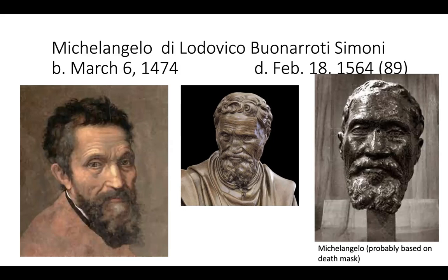Michelangelo was born outside of Florence. His mother died by the time he was six years old. His father was in banking but they weren't wealthy. They went back to Florence where his father was a magistrate. He caught the eye of Lorenzo the Great — the Medici — who had this grand palace and offered Michelangelo his own place within it among a few other students, where he could do whatever he wanted in his studio.